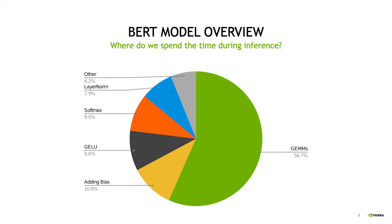Those fully connected layers are composed of matrix multiplication and bias addition. If we take a look at where we are spending most of the computational time in terms of operation types, we can see that more than 50% is spent on matrix multiplications. This may change depending on the batch size and sequence length, but in general most of the time is spent on GEMMs. Then the other four relevant operations in terms of computational time are layer norm, softmax, GeLU, and bias addition.